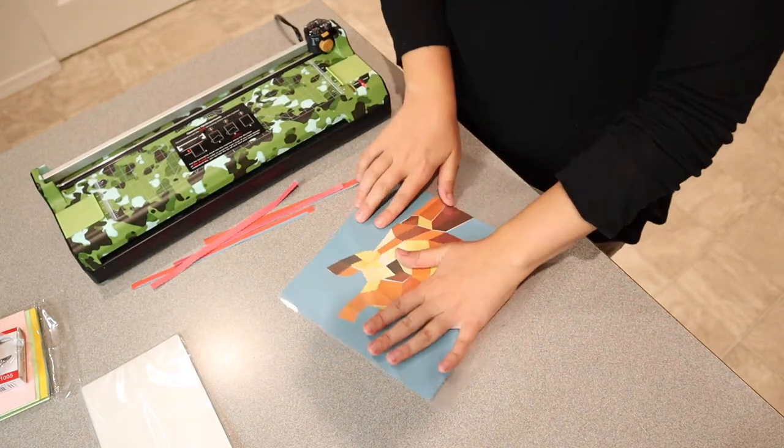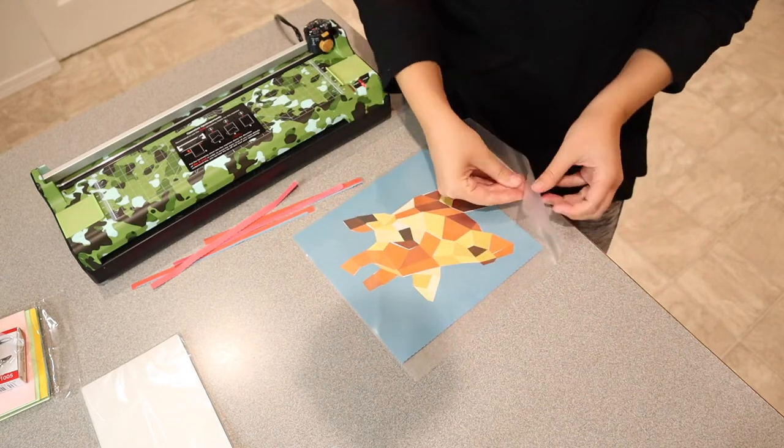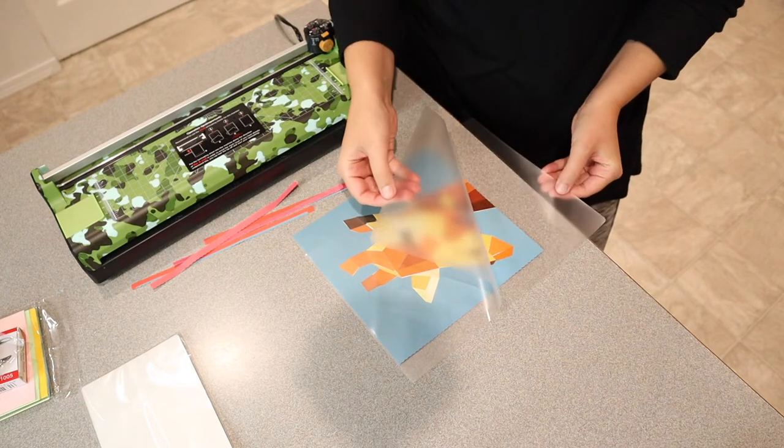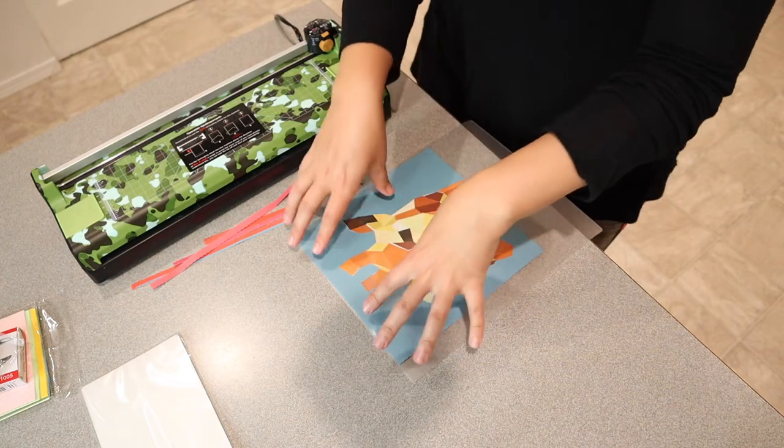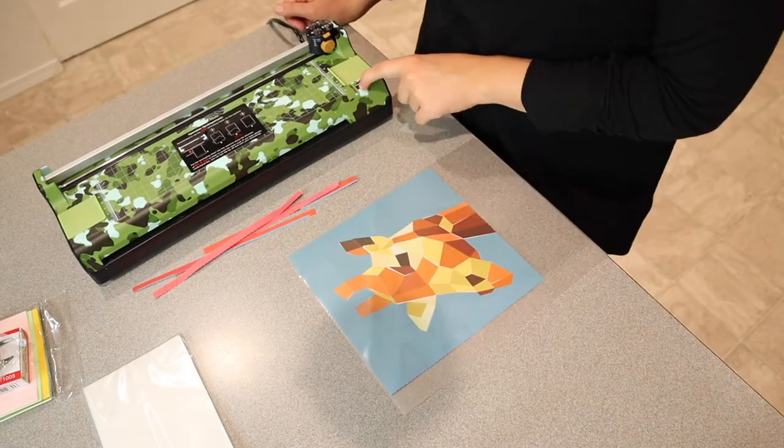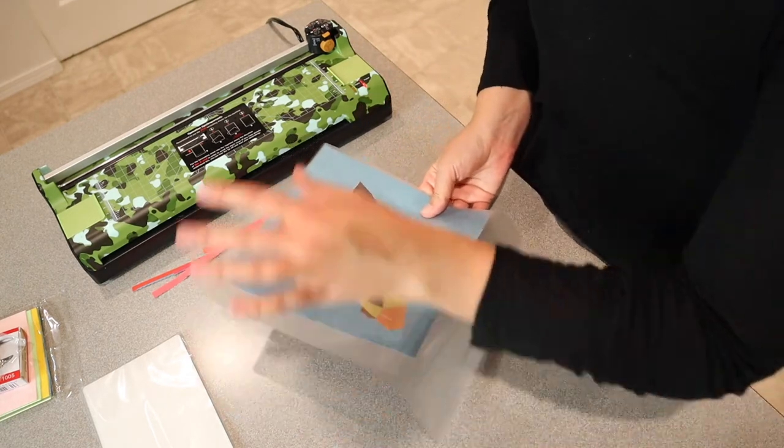And I like to put all of the things that I'm laminating all the way over to the far corner here. You can see that this opens up and I just placed my piece inside. And then we're going to feed it in this sealed corner first or this sealed side first. This took just about five minutes to warm up, so we are ready to go.